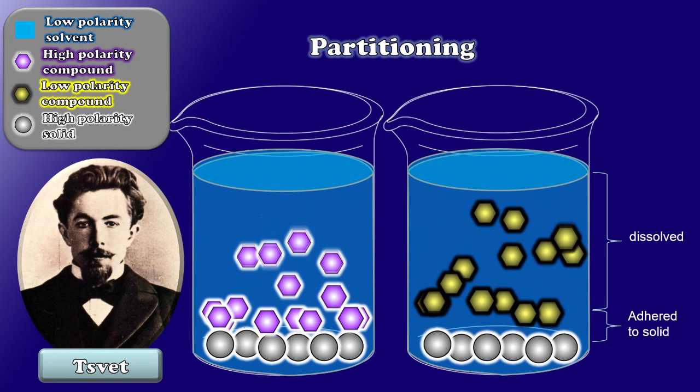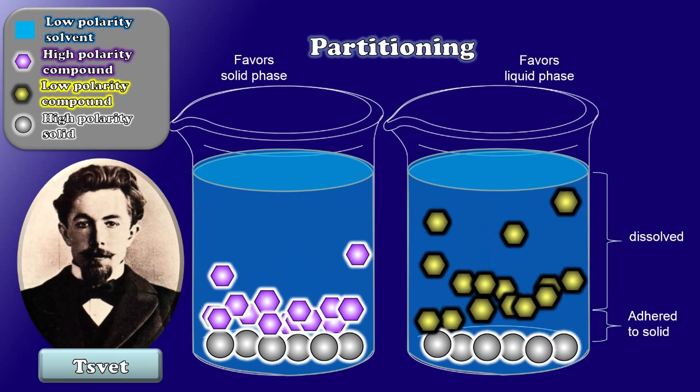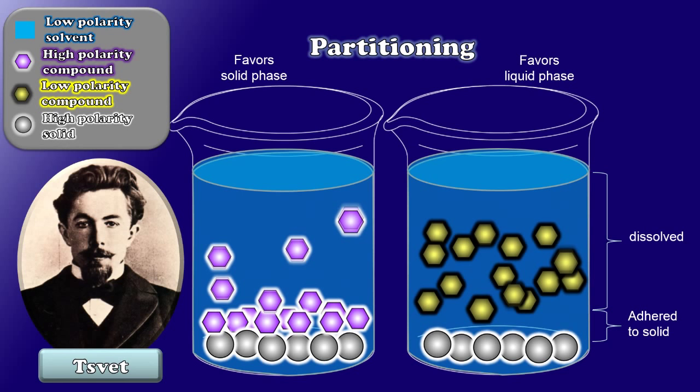In our case here, the high polarity compound favors the solid phase, whereas the low polarity compound favors the liquid phase. But how do we translate this into a separation technique?